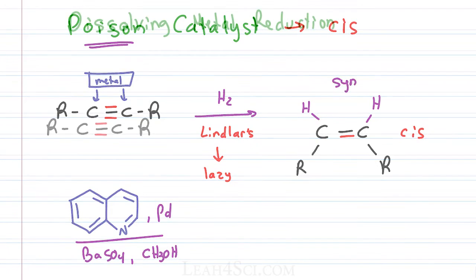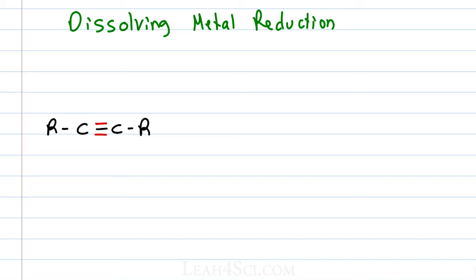This is opposite of the dissolving metal reduction where the key intermediate that determines the Y is a radical. And that radical intermediate will force a trans final product. This reaction happens because we're using a group one element which in its neutral state has just one valence electron.